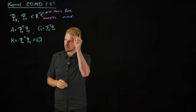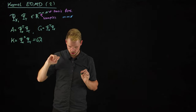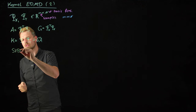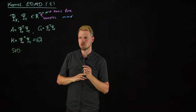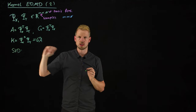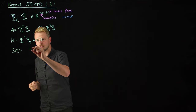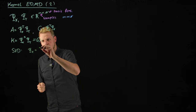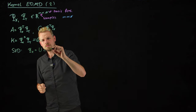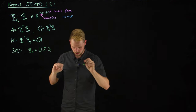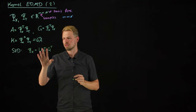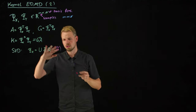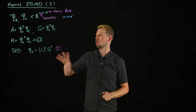As an intermediate step, we're going to need the singular value decomposition of our feature matrix. If you are uncertain what this is about, I will add a link to a video introducing the SVD. What we get from the SVD is a product of three matrices of the form U times sigma times Q transposed — a very specific type. I'll denote this as equation number one, since I'll use it to derive the kernel version of EDMD.